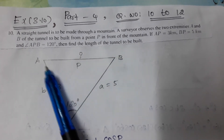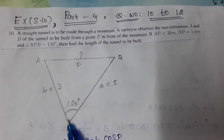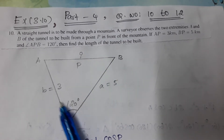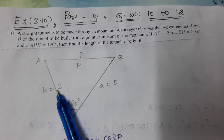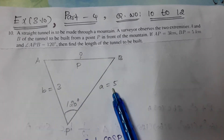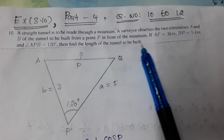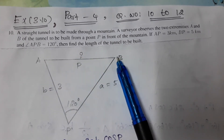A and B are the starting and end points of the tunnel. The total angle APB is 120°. AP = 3 km and BP = 5 km. We will find the length of the tunnel AB.